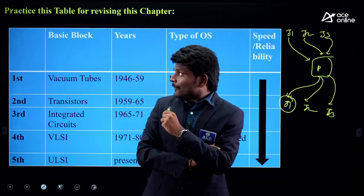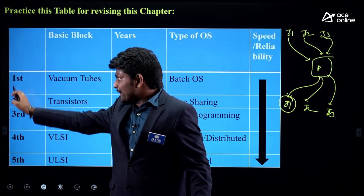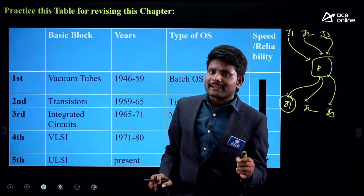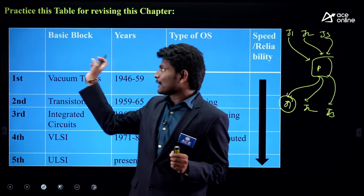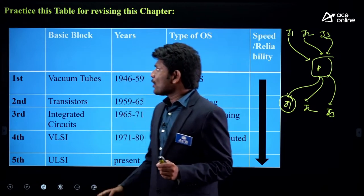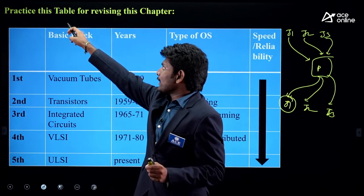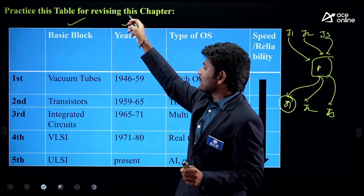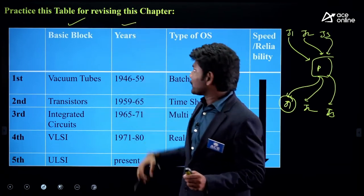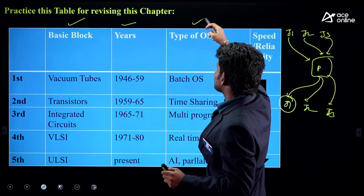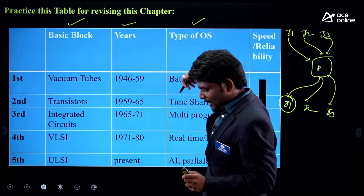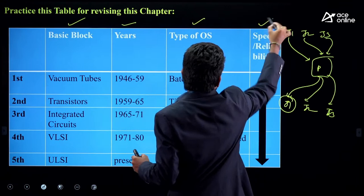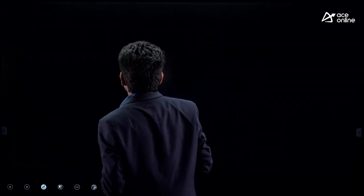How did we practice? We took all five generations and collected all vital information related to each generation: what basic blocks were used, what years the computers were active, what type of OS was used, and what was the speed and reliability of each generation.